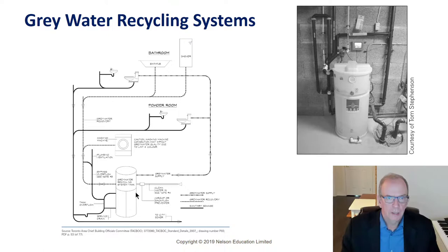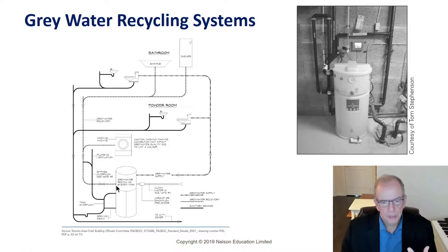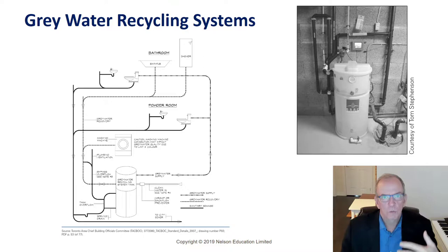It's important to define the difference between green and sustainable building. Green building means building above minimum building code standards — constructing to a higher standard than currently required. Sustainable building means building in a way that will positively impact future generations — net zero is an example of sustainable building.